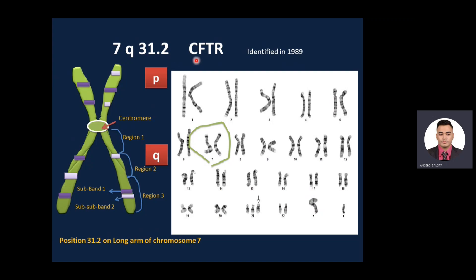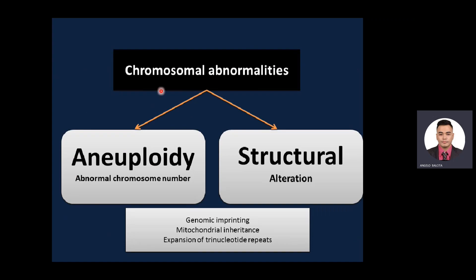This defect is in the cystic fibrosis transmembrane conductance regulator, responsible for chloride ions. Chromosomal abnormalities include aneuploidy — an abnormal number of chromosomes, for example 47 instead of 46 — and structural abnormalities, where the numbers are the same but there is a problem with structure, such as translocation, duplication, and deletion. Other categories include genomic imprinting, mitochondrial inheritance, and expansion of trinucleotide repeats.